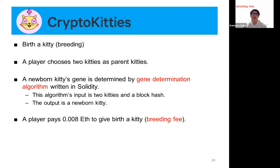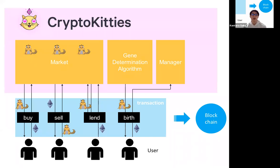I explain breeding in detail. A player first sets up parent kitties. The gene of the newborn kitty resulting from the breeding process is determined by an algorithm whose input is the parent kitties' genes and the matron kitty's target block hash value, and its output is the newborn kitty. When breeding, a player has to pay the breeding fee, which is 0.008 Ethereum. Users are trading through the market. The service manager profits from the breeding fee. All transactions that occur in this game are recorded on blockchain.